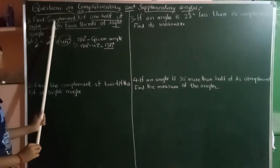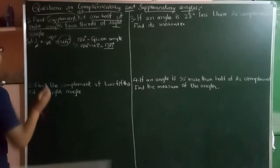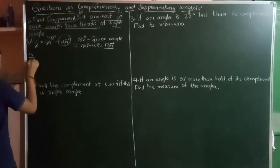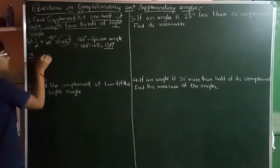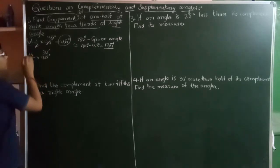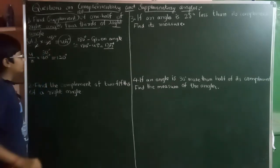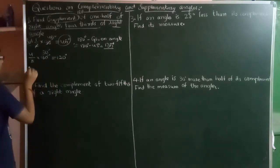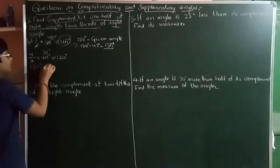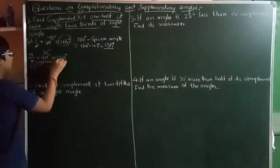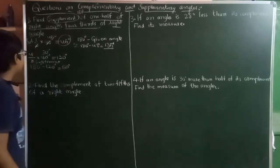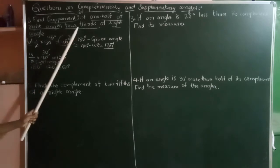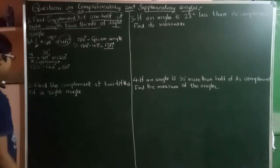Now we should find the supplement of four-thirds of a right angle. Four-thirds means 4 by 3 into 90 degrees. Three thirties are 90, so 30 into 4 gives us 120 degrees. Its supplement will be 180 degrees minus 120 degrees, that is 60 degrees. So the supplement of four-thirds of a right angle, that is 120 degrees, is 60 degrees.